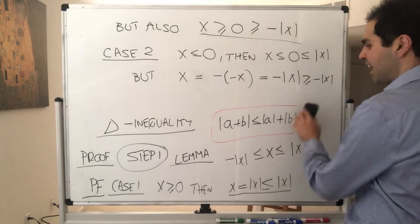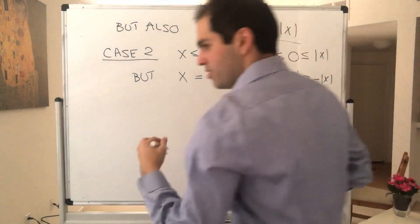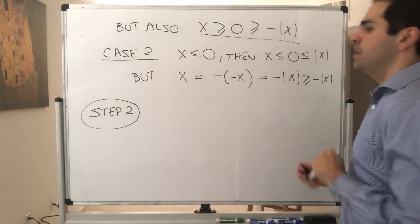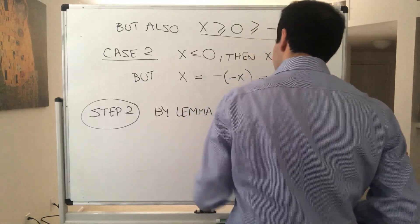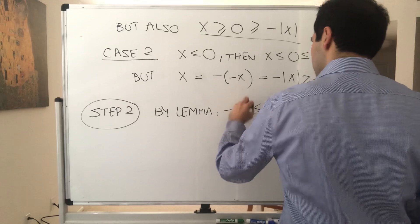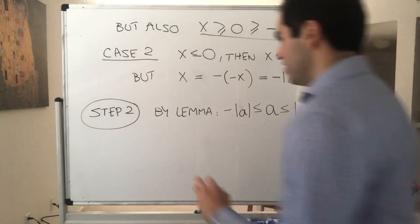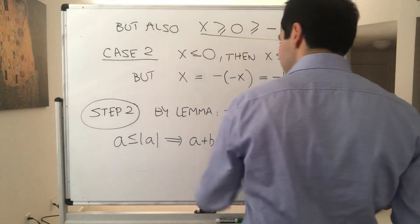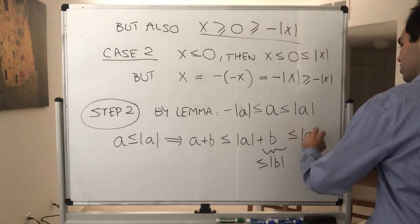So x is squeezed between its magnitude and negative its magnitude. Now for step two: by the lemma we know that a is squeezed between absolute value of a and minus absolute value of a. We want to show that the absolute value of a plus b is less or equal to the absolute value of a plus the absolute value of b. So we add b to both sides: a ≤ |a| implies a + b ≤ |a| + b, and since b ≤ |b|, we get a + b ≤ |a| + |b|.